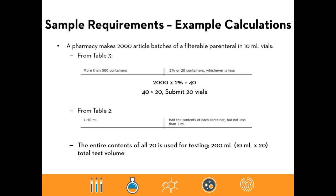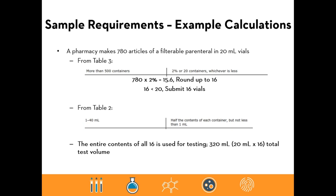Example two: a 2,000-article batch in 10 mL vials. From table three, more than 500 containers requires 2% or 20 containers, whichever is less. 2% of 2,000 is 40 vials, which exceeds 20, so 20 vials are submitted. The 10 mL fill falls in the 1-to-40 mL category, so the full contents of each 10 mL vial will be tested. Total test volume: 10 mL × 20 vials = 200 mL.